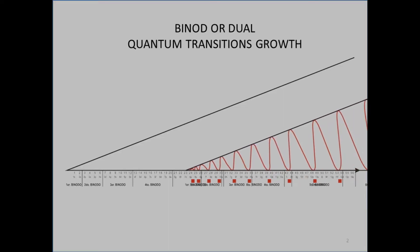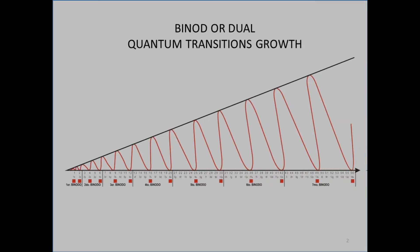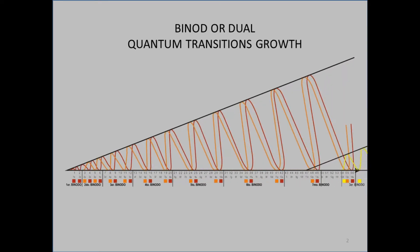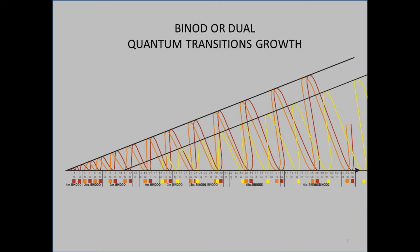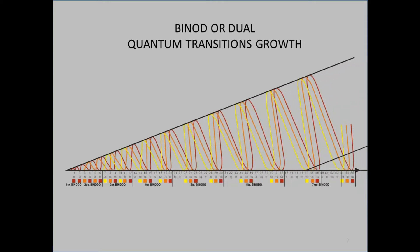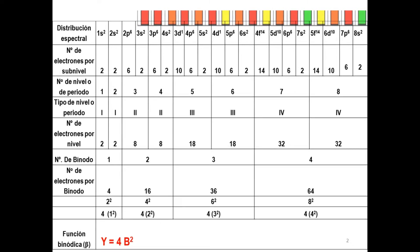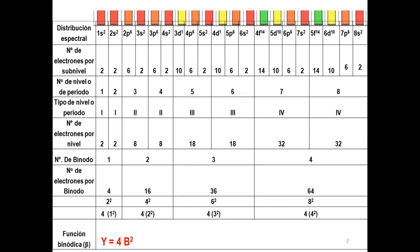The spirals of the Quantic Function show, in this simulation, its dual or joint character. Each spiral after two developments leaves two spaces to contain the next spirals, to form the same color sequence as the electron distribution, which is deployed in a series of sub-levels, numbers of periods and numbers of binodes, and quantities of protons or electrons.